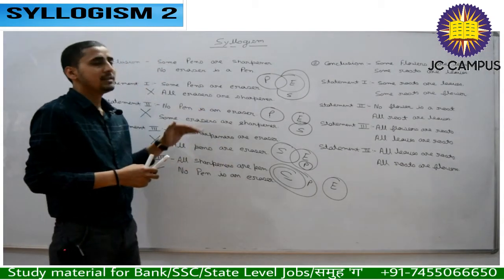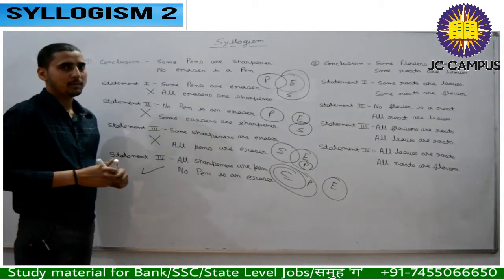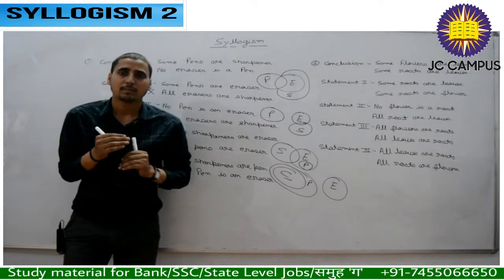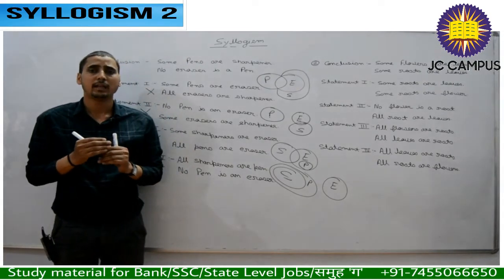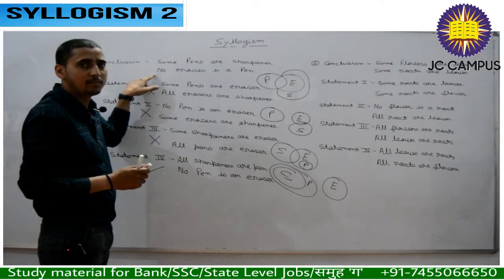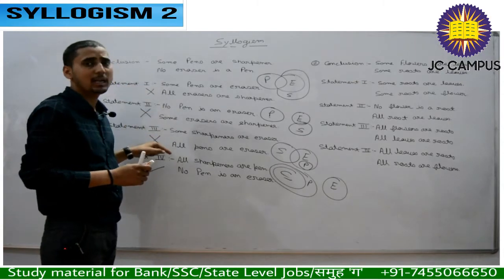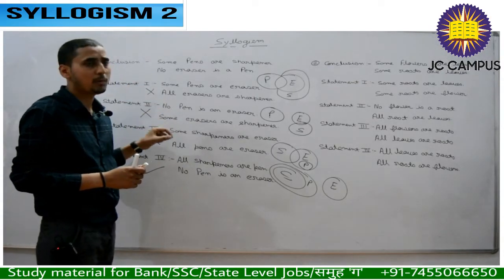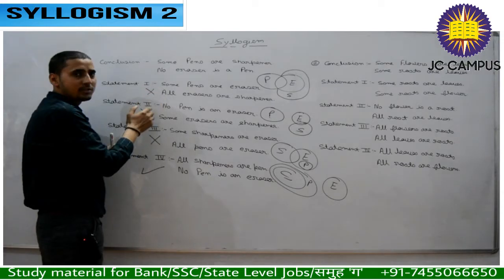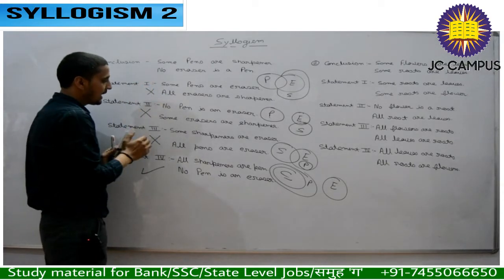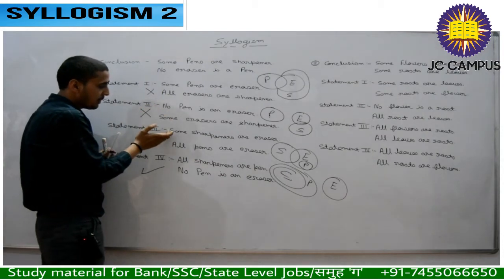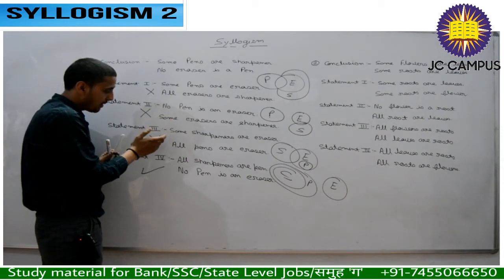This is how we determine which conclusion follows from which statement. Keep in mind from the first video: if you have positive statements, you can have a negative conclusion. Both positive statements together will not give a positive conclusion — that would be wrong. One positive and one negative is a possible answer.